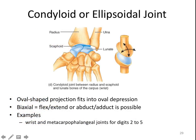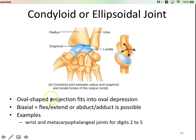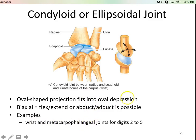Ellipsoidal joints — also called condylar joints — have an oval-shaped projection and an oval-shaped depression. You can have flexion, extension, abduction, and adduction, so you can also have circumduction occurring. Examples include your wrist joints and the metacarpophalangeal joint.